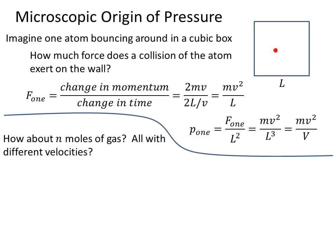How about if we have N moles of gas, not just one in the box, and all have different velocities? Well, we're going to have to average over these different directions and different velocities.